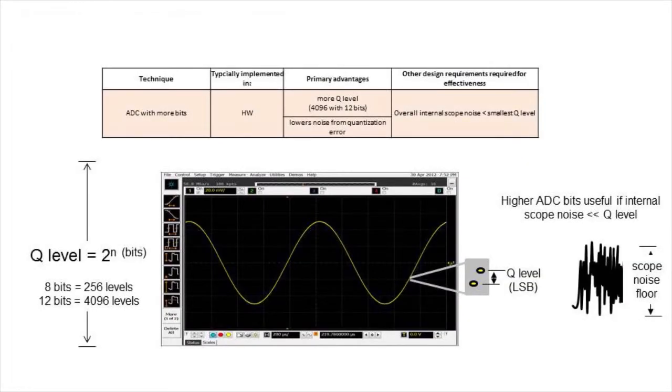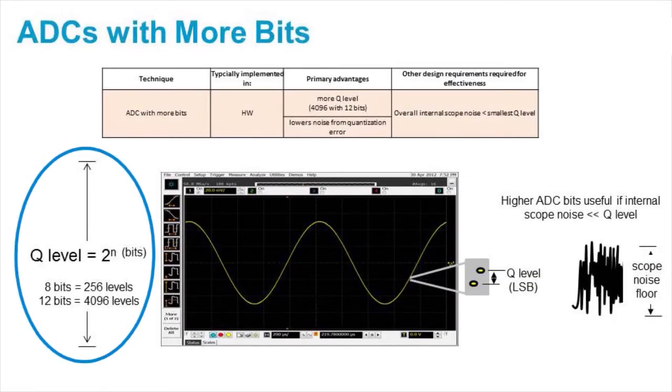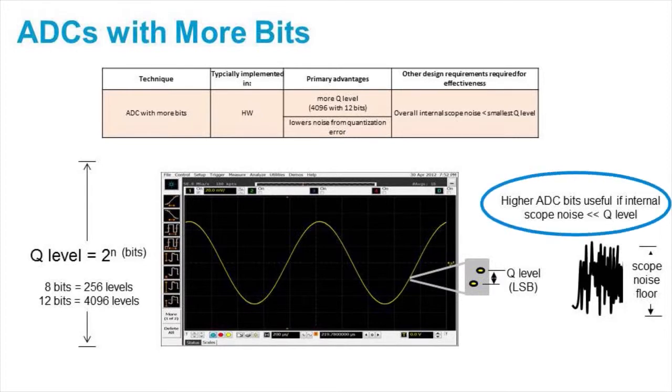One of the techniques is to use oscilloscopes that have higher bits in their A to D converters. One key consideration for this is as oscilloscopes are able to quantize smaller and smaller values, the scopes need to have front ends that have less and less noise so that the noise doesn't outweigh the quantization ability of the scope.